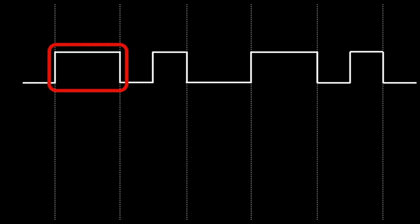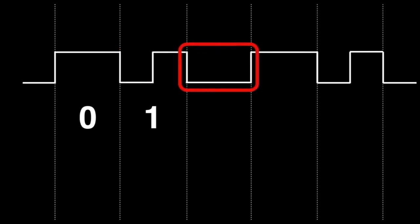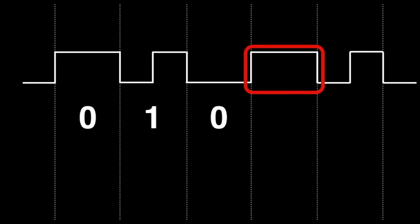Looking at the first cycle, we see the signal being high during the entire cycle — there is no change in polarity, meaning it is a zero. The second cycle has a transition from low to high halfway through the clock cycle and therefore is a one. It also could have been a transition from high to low. It is the polarity change within the cycle that counts. The third cycle remains low — no polarity change, thus a zero. The fourth cycle remains high — again no polarity change — thus a zero. The fifth cycle goes from low to high halfway, so it is a one.